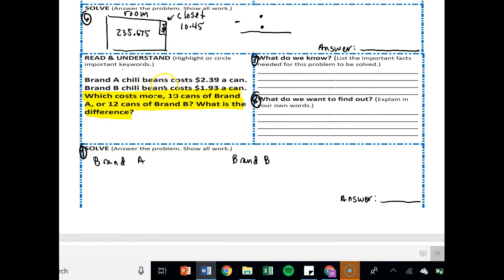Next one, seven through eight. It says brand A chili beans cost $2.39 a can. Brand B chili beans cost $1.93 a can. Which costs more? 10 cans of brand A, 12 cans of brand B. What is the difference? So what do we know? We know brand A, that's $2.39 a can. Brand B, that's $1.93 a can. What do we want to find out? What costs more, right? And it's not just does brand A or brand B cost more? We want to find out what costs more if I buy 10 cans of A and 12 cans of B. And also very important, what is the difference? So this question is really asking two questions. So which costs more? And then what's the difference?